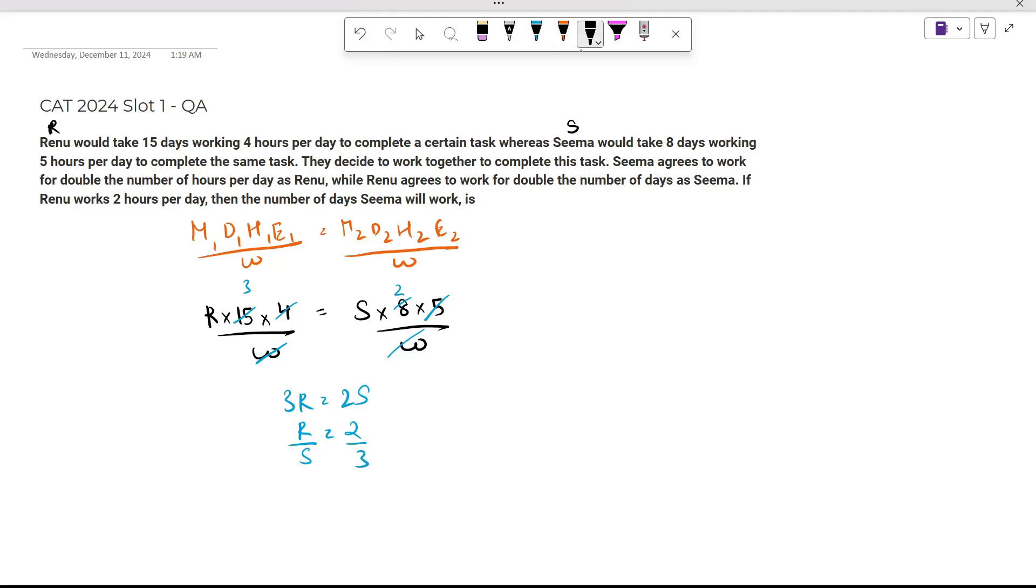If we have the value of R and S, we can calculate the work. Work is R into 15 into 4, or S into 8 into 5. You'll get the same values. If R is 2: 15 times 4 is 60, times 2 is 120. If S is 3: 8 times 5 is 40, times 3 is 120. So work is 120.